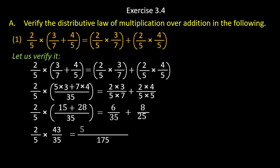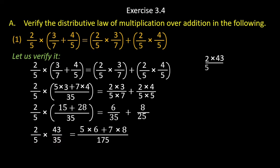35 will be divided with 175, you will get 5, and 5 will be multiplied with 6. Plus 25 will be divided with 175, and the answer will be 7, and 7 will be multiplied with 8. Now multiply numerator and denominator: 2 multiply 43 and denominator 5 multiply 35. On the other side, 5 into 6 will be 30 plus 7 into 8 will be 56, and 175 LCM will be the same.